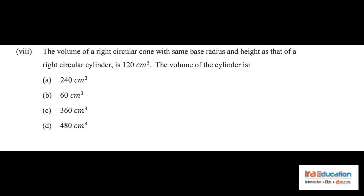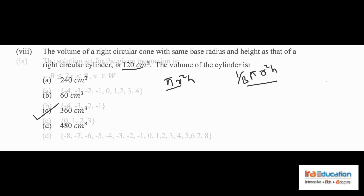Problem 8 requires knowing the volume formulas. Volume of a cylinder is πr²h, and volume of a right circular cone is (1/3)πr²h. Therefore the volume of a cylinder is always three times the volume of the cone. So we calculate 120 times 3, giving 360 cubic centimetres as the answer.